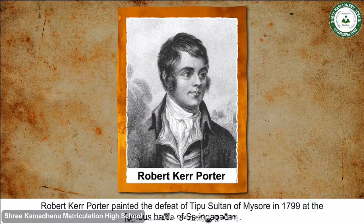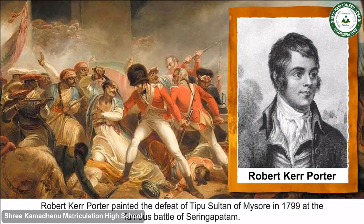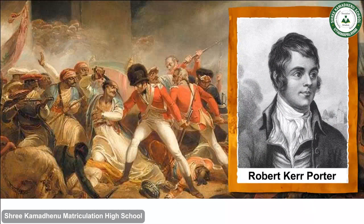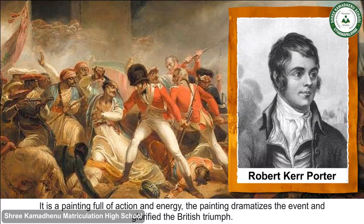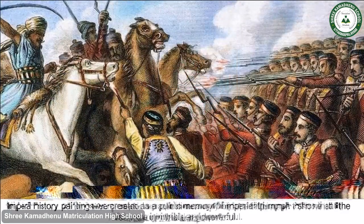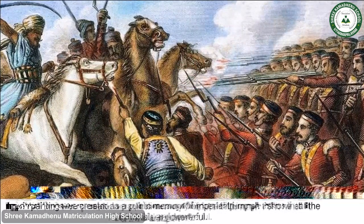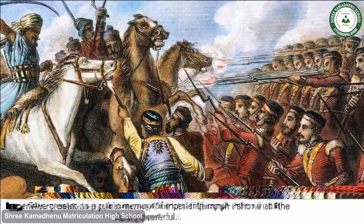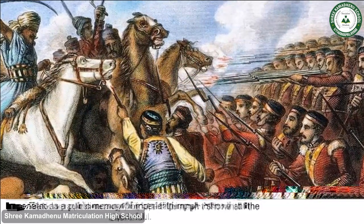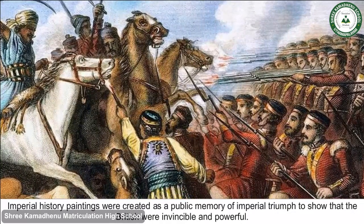Robert K. Potter painted the defeat of Tipu Sultan of Mysore in 1799 at the famous Battle of Seringapatam. It is a painting full of action and energy that dramatizes the event and glorified the British triumph. Imperial history paintings were created as a public memory of imperial triumph, to show that the British were invincible and powerful.